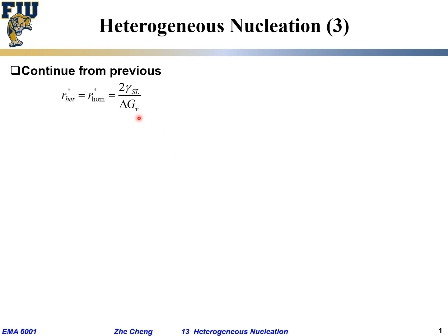From the previous discussion, heterogeneous nucleation versus homogeneous nucleation share the same r*, the critical nucleus radius of curvature, given by gamma over delta gv. Gamma is the interfacial energy between solid and liquid — for a given system, such as liquid aluminum and solid aluminum, or liquid silicon and solid silicon, it is a fixed value.